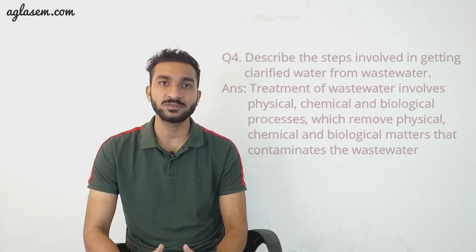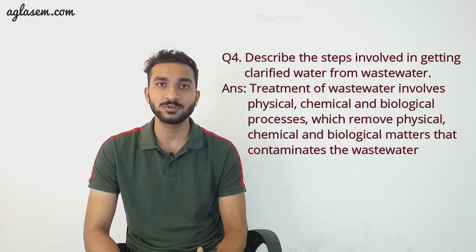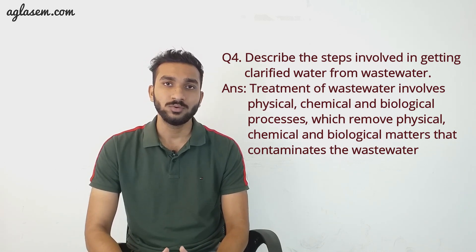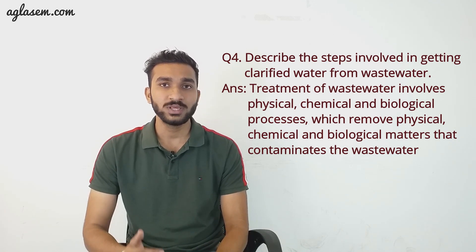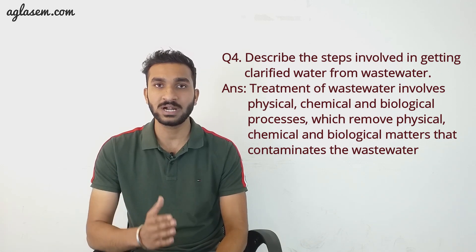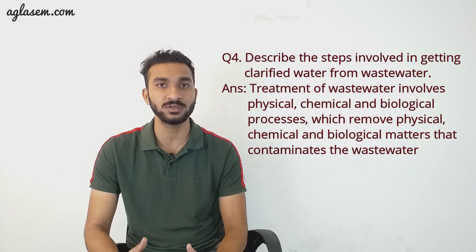Question 4: Describe the steps involved in getting clarified water from wastewater. Treatment of wastewater involves physical, chemical, and biological processes which remove contaminants. Step 1: Wastewater is passed through a bar screen which removes large objects like rags, sticks, cans, plastics, etc. from the wastewater.